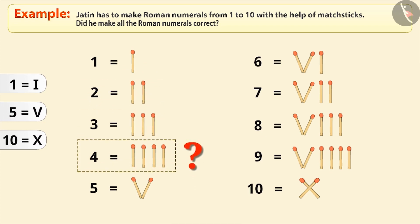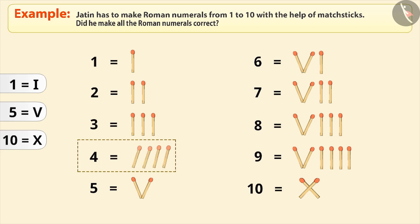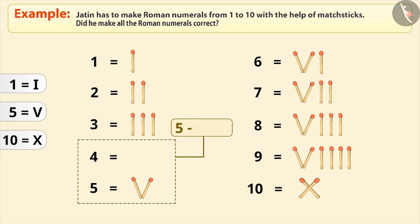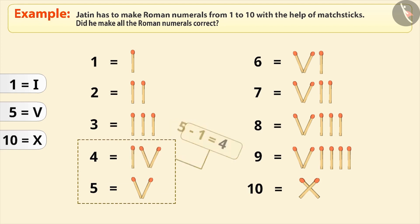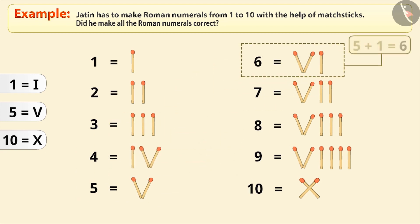Has he expressed 4 correctly? No. This is because no symbol is repeated more than 3 times. So how do we write 4? Since 5 minus 1 is equal to 4, we write the symbol of 1 to the left of the symbol of 5. Similarly, since 6 is 1 more than 5, we write the symbol of 1 to the right of 5.